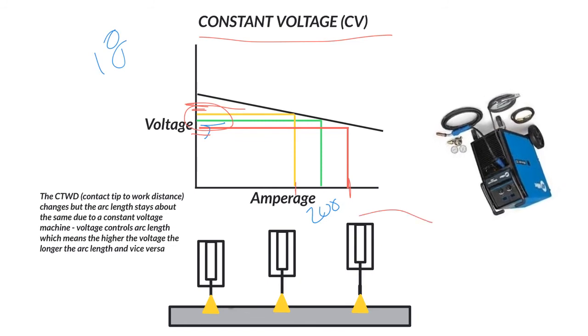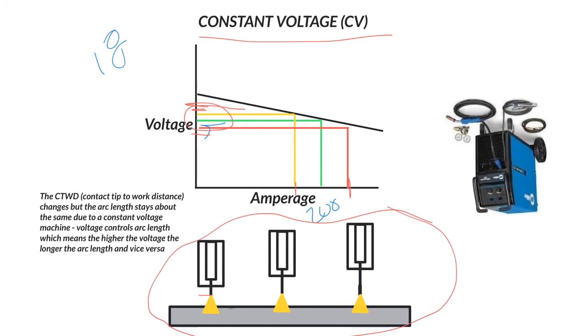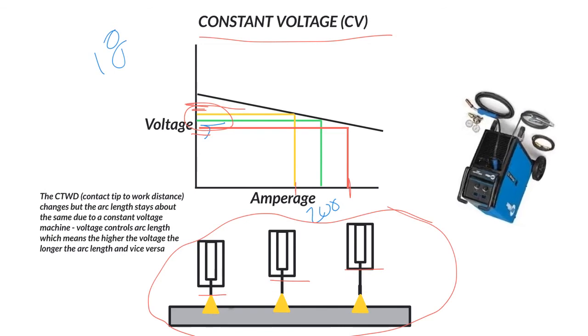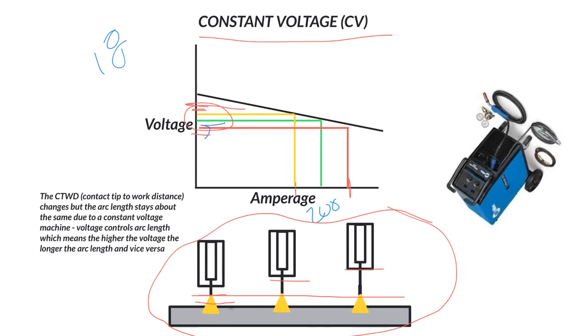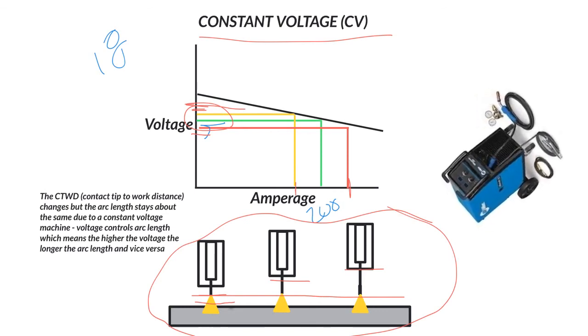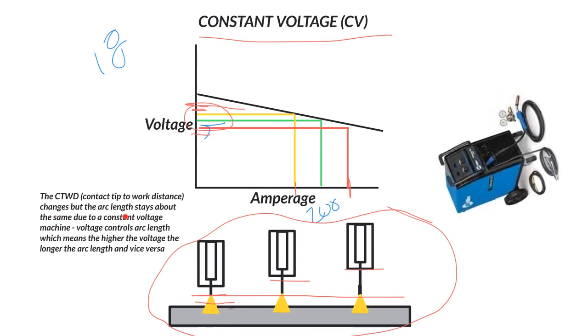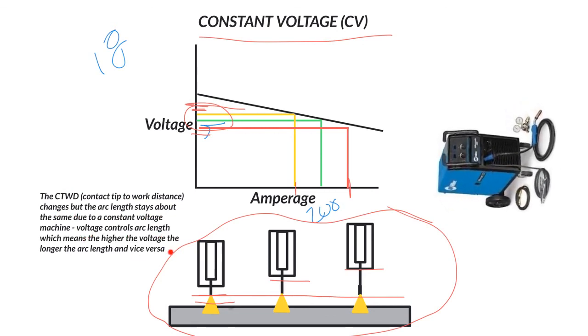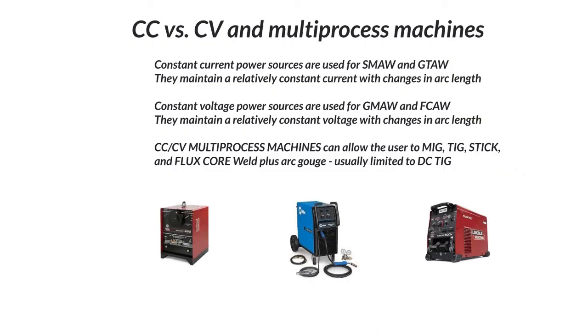And when you look at this little diagram down here, this is really trying to explain to you that even if your nozzle is a little bit different, this is quite exaggerated in my picture, but you can see that that arc length, if I control a straight line, is about the same. So that's the idea. That's what this machine is trying to do is maintain a perfect arc length. So the contact tip to work distance changes, but the arc length stays about the same due to the constant voltage machine. Voltage controls arc length, which means the higher the voltage, the longer the arc, and vice versa. And there is a brief summary of constant current versus constant voltage. I'll see you next week.